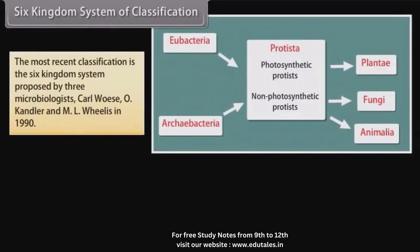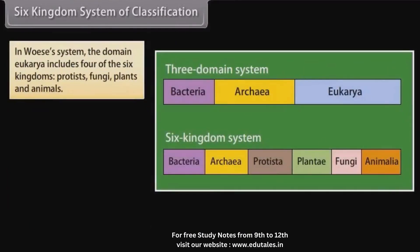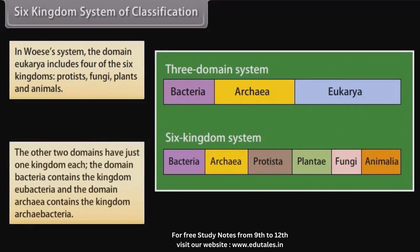The most recent classification is the 6 Kingdom System proposed by three microbiologists — Carl Woese, O. Candler, and Emil Willis — in 1990. They proposed that all organisms be divided into three major groups called domains above kingdom level: Eukarya, Bacteria, and Archaea. In this system, the domain Eukarya includes four of the six kingdoms: Protists, Fungi, Plants, and Animals. The domain Bacteria contains the kingdom Eubacteria, and the domain Archaea contains the kingdom Archaebacteria.